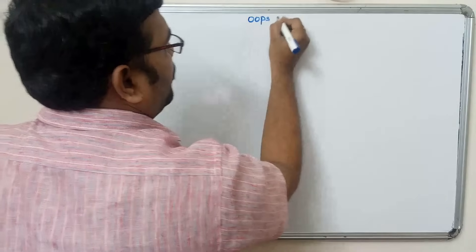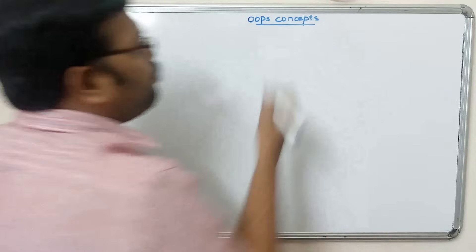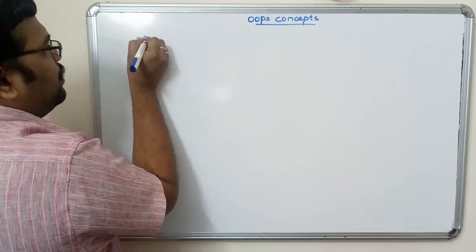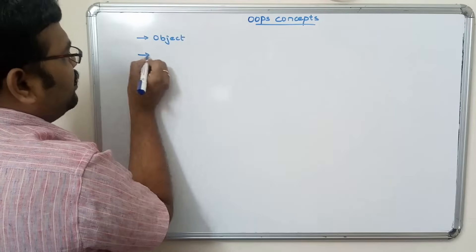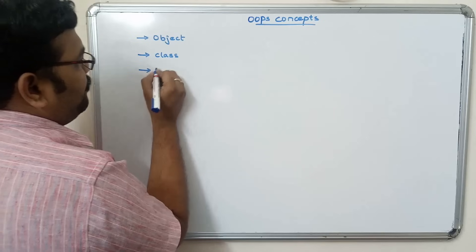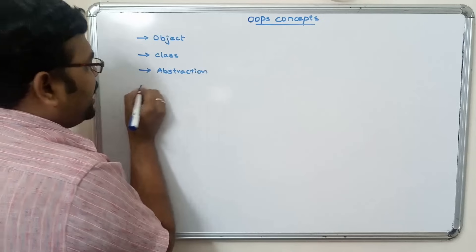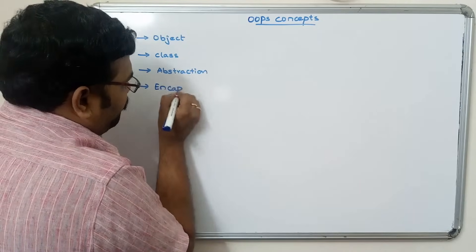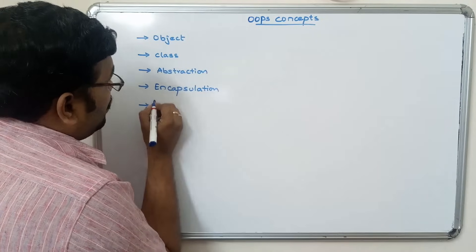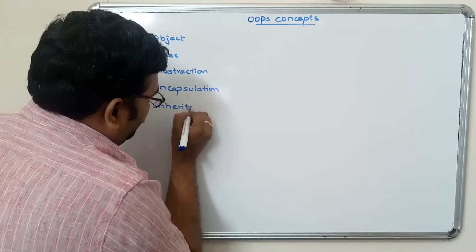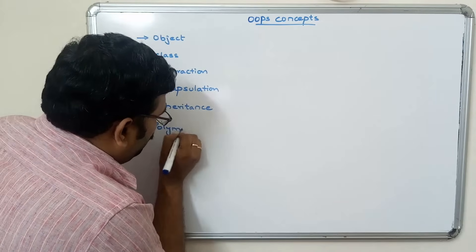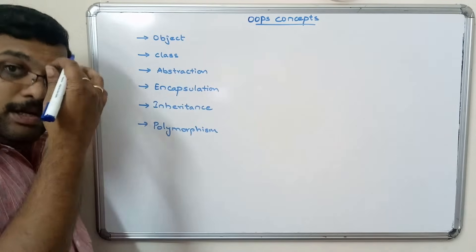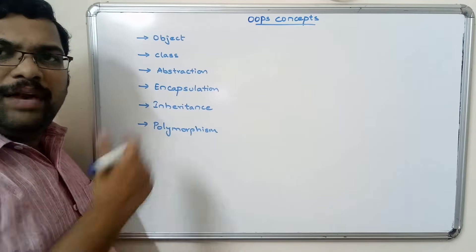Hello friends, welcome back to our channel. In the previous session we covered Java buzzwords, which we call features. In this session, let us have a look at the OOP concepts: object, class, abstraction, encapsulation, inheritance, and polymorphism. We will see each one by one.